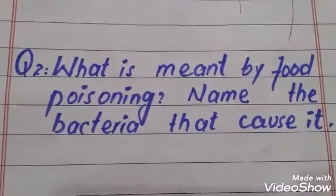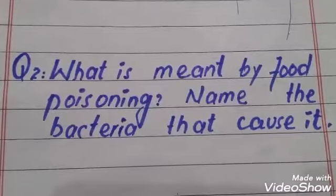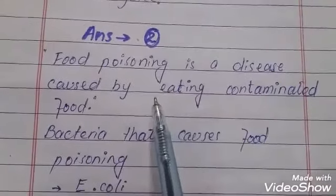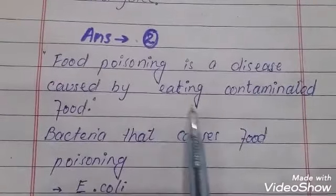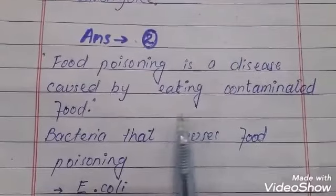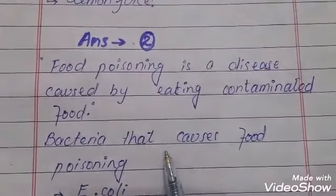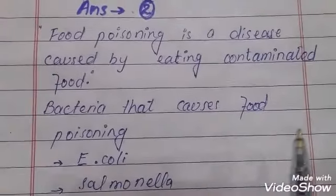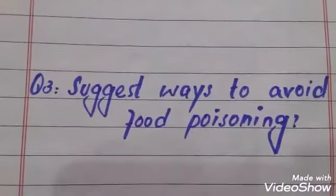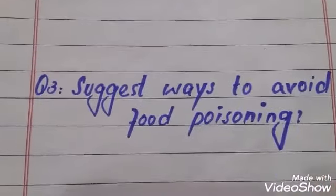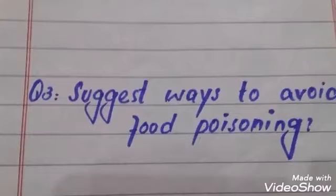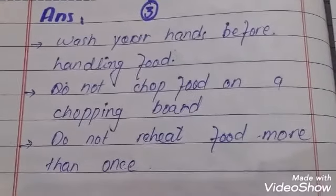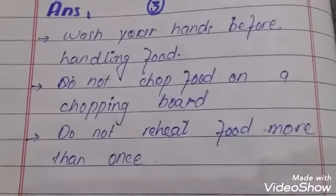Question two: What is meant by food poisoning? Name the bacteria that cause it. Answer: Food poisoning is a disease caused by eating contaminated food. Bacteria that cause food poisoning are E. coli and Salmonella.